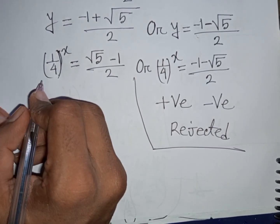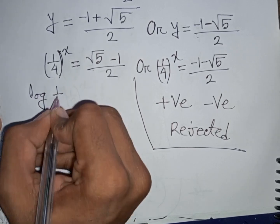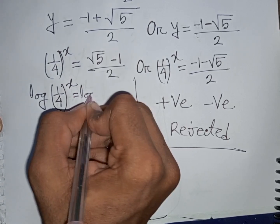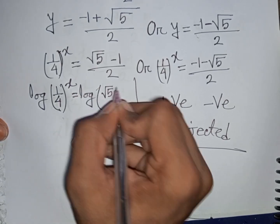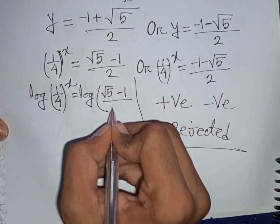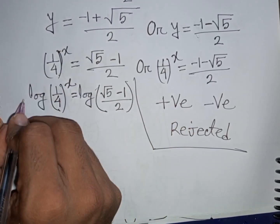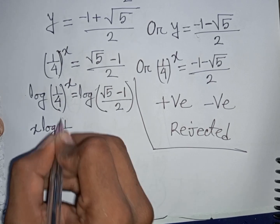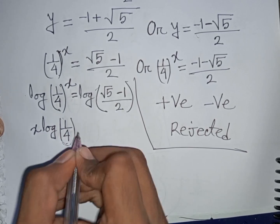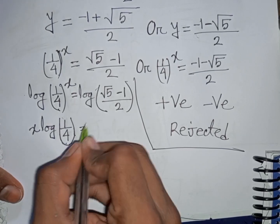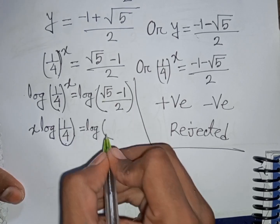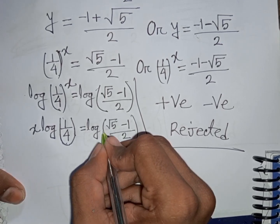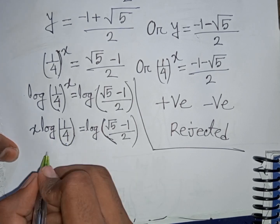From the valid case, we take log on both sides: log[(1/4)^x] = log[(√5 - 1)/2]. This power x moves to the front, giving x · log(1/4) = log[(√5 - 1)/2].